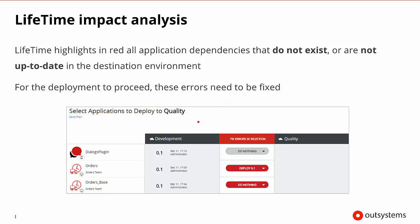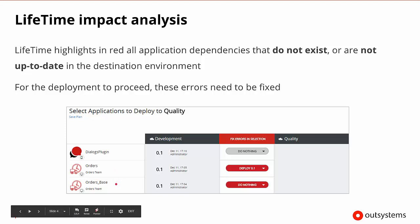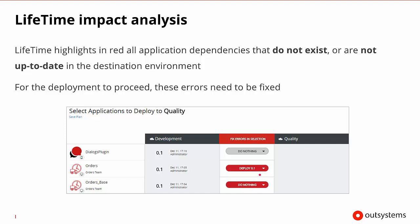Looking at an example, we may go to our orders application and ask it to deploy version 0.1. When it goes to deploy 0.1 to quality, it finds that orders is using the orders base application as well. So because orders is using orders base, and orders base was set to do nothing, both of these are highlighted in red as being incorrect for that particular deployment.